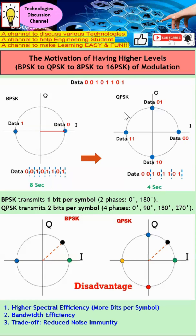Therefore, if I'm able to put more dots onto the constellation diagram, I will have better throughput. This is the motivation for having higher-level modulation — to achieve better throughput. If you need more information, please see the playlist under the description.